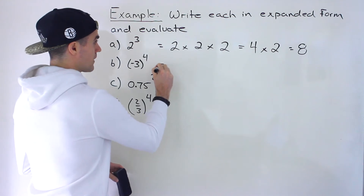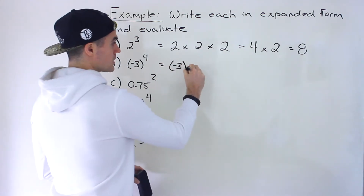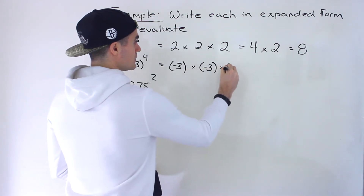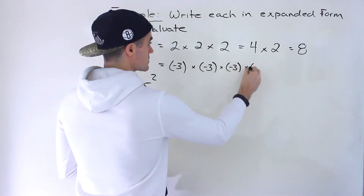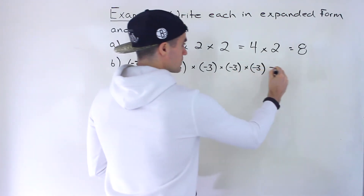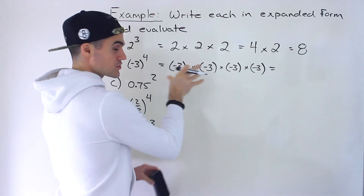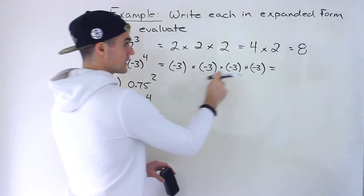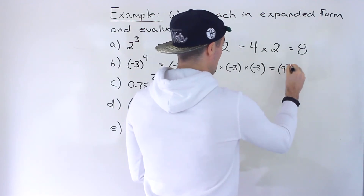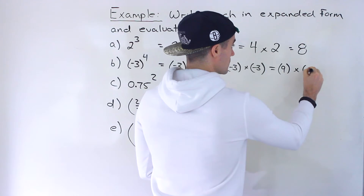Part b: we have negative 3 to the power of 4. Be careful with your brackets here — that gives us negative 3 times negative 3 times negative 3 times negative 3. From here, doing it in steps: negative 3 times negative 3 — watch out with your signs — negative times a negative gives you a positive, so we get positive 9.